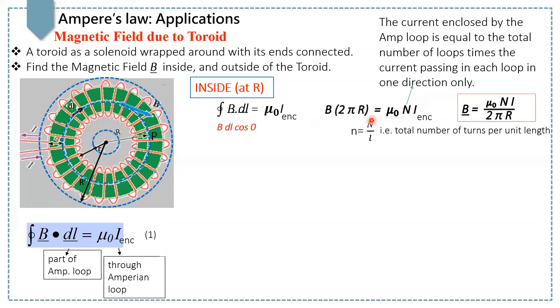The whole equation is now B into 2 pi R equals mu naught N I enclosed, which can further be written as magnetic field B equals mu naught N I over 2 pi R. This is the magnetic field at a distance R from the center to point P.